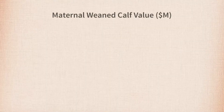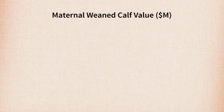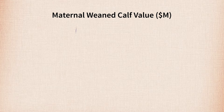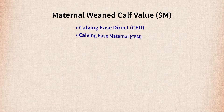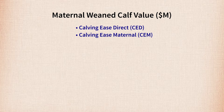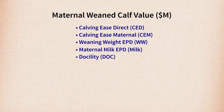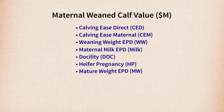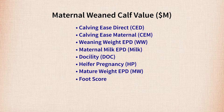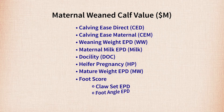As a result, nine different EPDs are directly influencing Dollar M. They include calving ease direct and maternal, weaning weight, milk, docility, heifer pregnancy, mature cow size, and the two new foot score EPDs: claw set and foot angle.